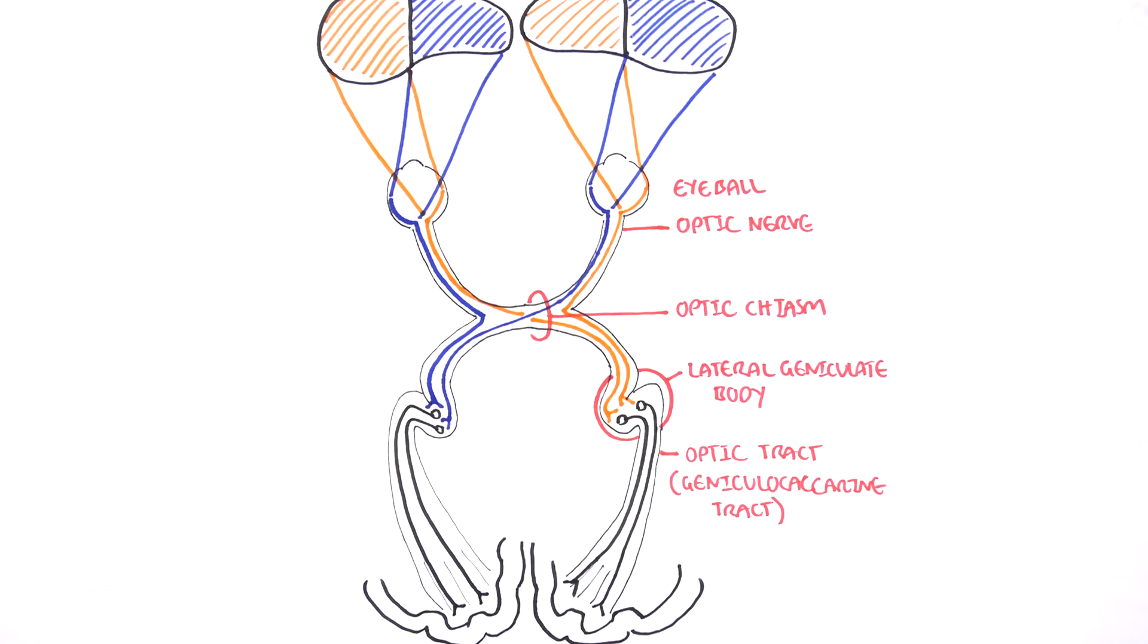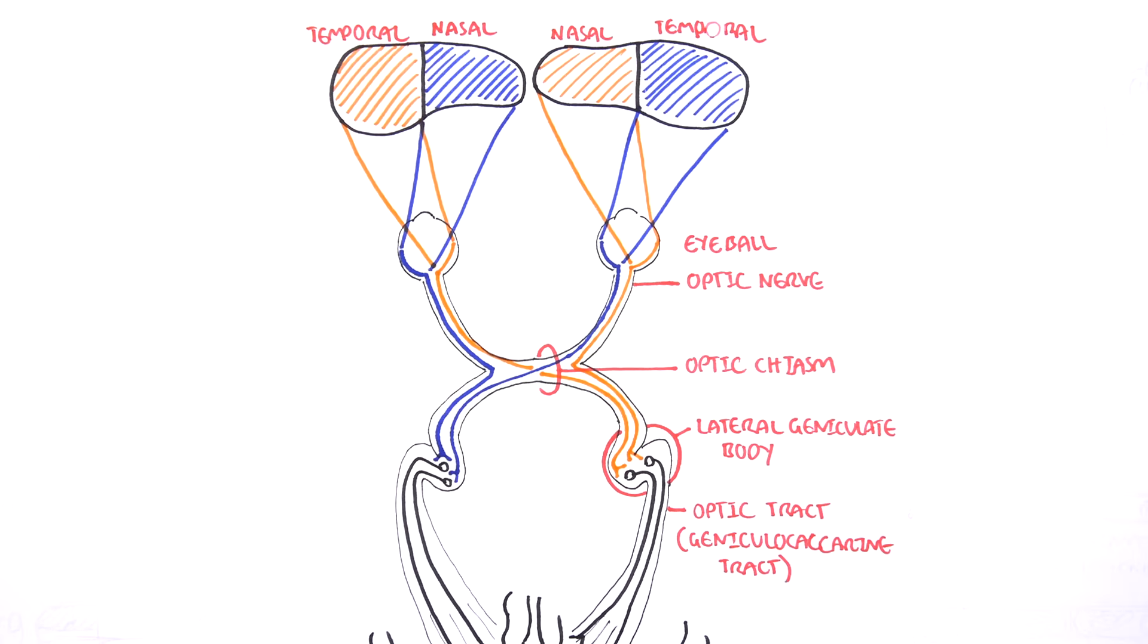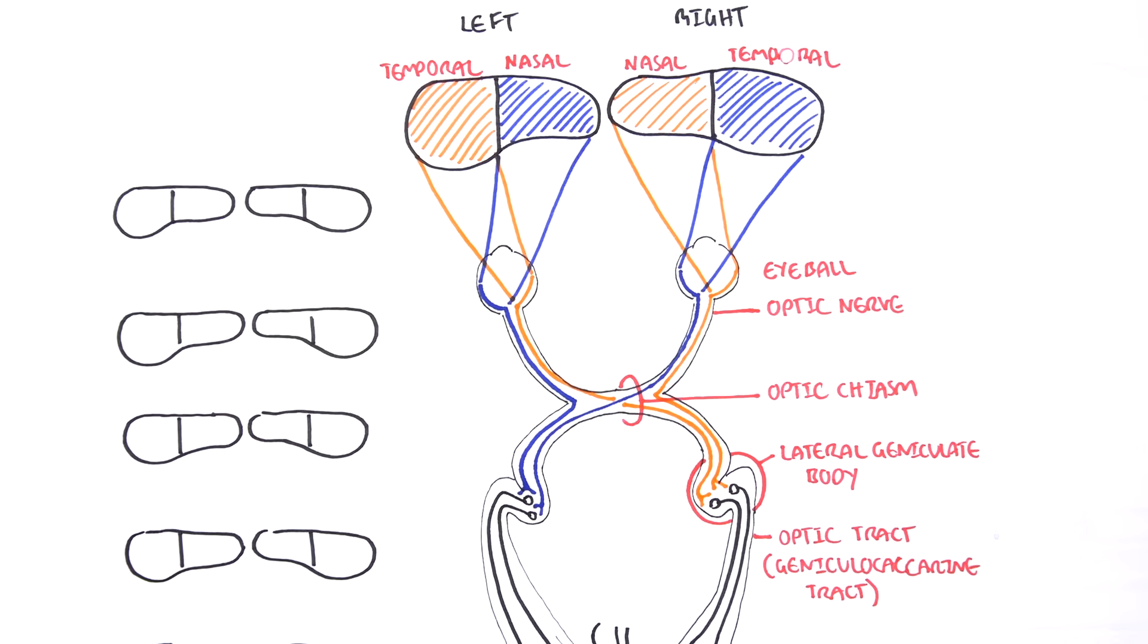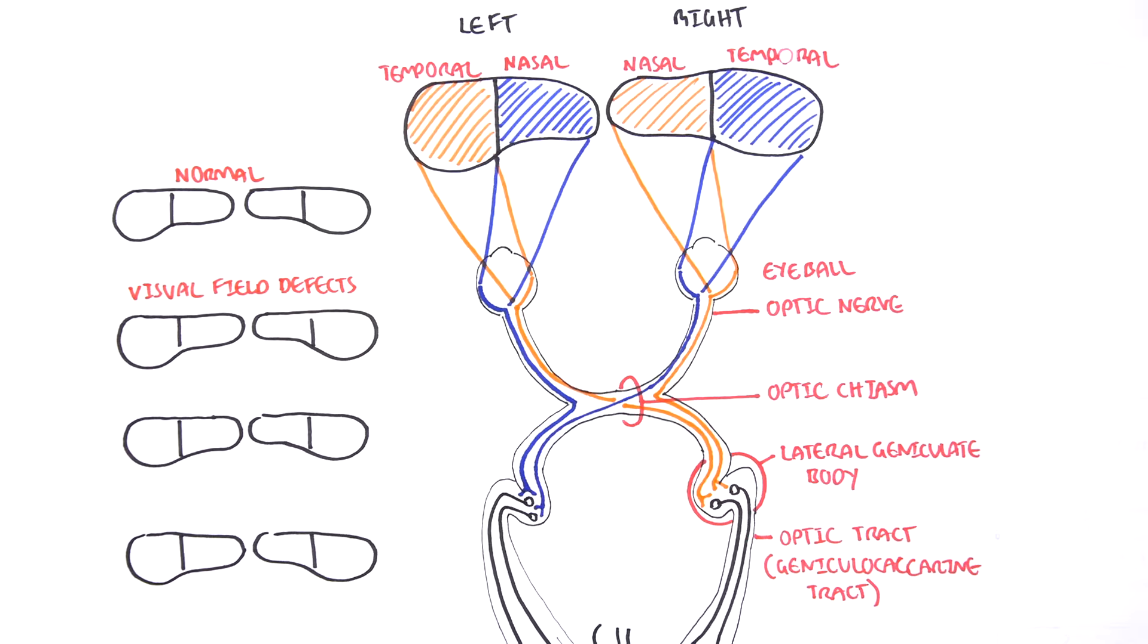Now, now that we have an overview or an understanding of the visual pathway, what happens to our vision if we have lesions occurring along these different paths? So, let us have a look and compare normal to defects in visual fields.